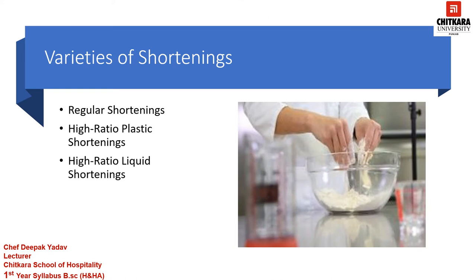If we would like to categorize shortening, we can categorize it in three categories. The first one is regular shortening. The second one is high ratio plastic shortening and the third one is high ratio liquid shortening. Regular or all-purpose shortening has a fairly tough waxy texture and small particles of the fat tend to hold their shape in a dough or batter. They are called plastic shortening, which means they are moldable at room temperature.